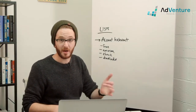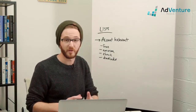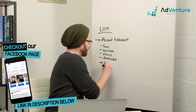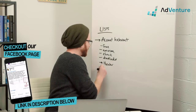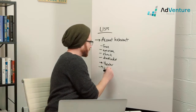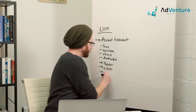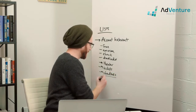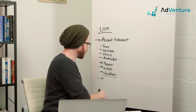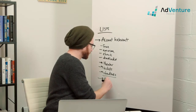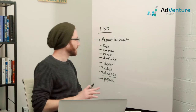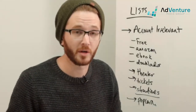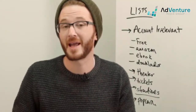For example, one of our clients is AMC Television Networks, which is often confused with AMC Movie Theaters. So account irrelevant terms for us would be things like 'theater,' 'tickets,' or 'showtimes' — or even 'popcorn.' You have to think about all the terms that might trigger searches for similarly named products.